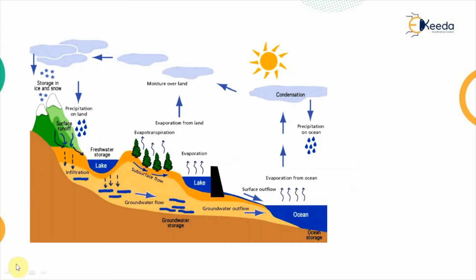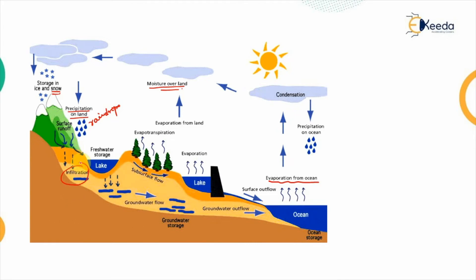As you can see in this image, evaporation from the ocean sends water vapors up into the atmosphere. At a suitable height, these water vapors condense into cloud form. The cloud moves over the land due to wind effects, carrying moisture. When it reaches a suitable place, precipitation on the land happens either as raindrops, snow, or other precipitation forms.